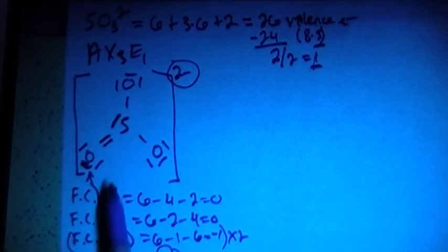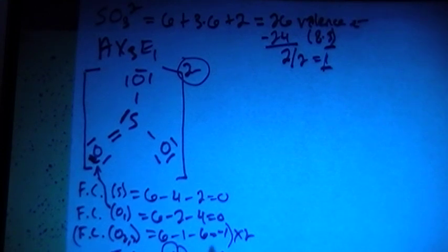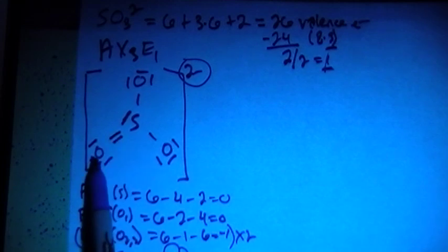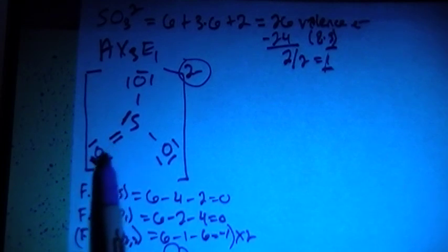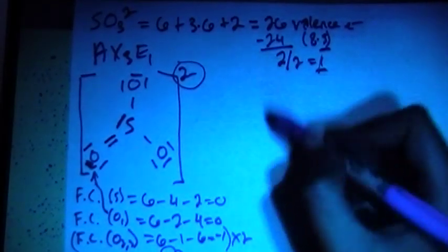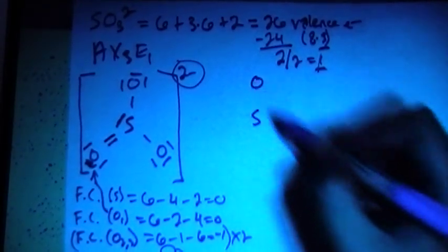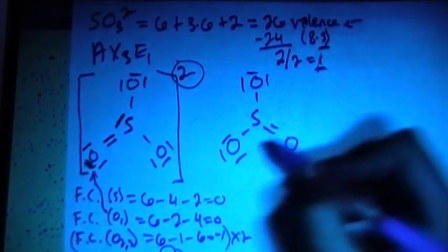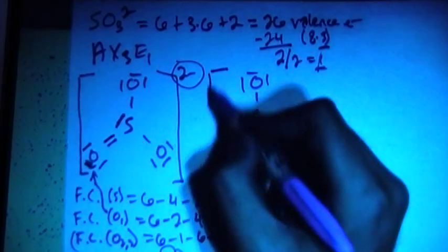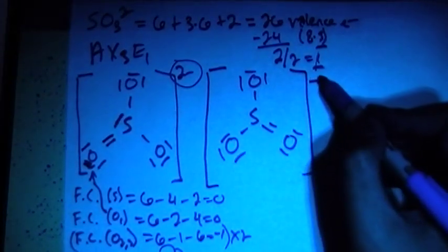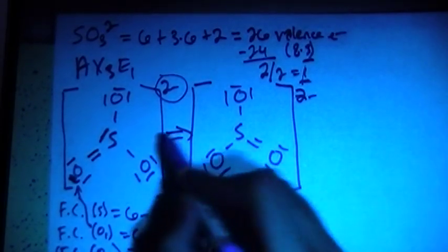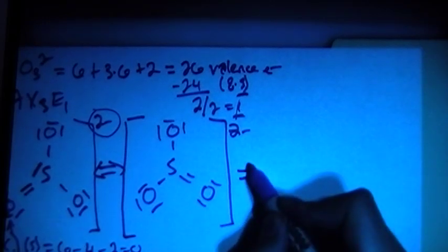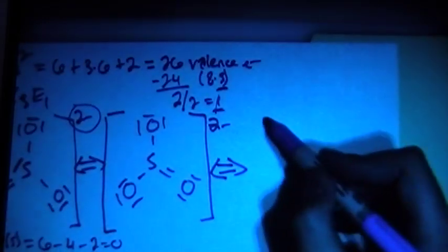So this structure is correct. Now, this is where the resonance structure is going to come in, because who's to say we had to choose this specific oxygen to create the double bond? We could have done it with this one or this one. So that's when you're going to have to draw in your three resonance structures.